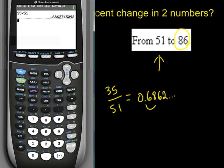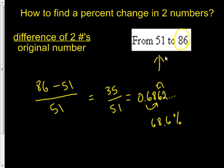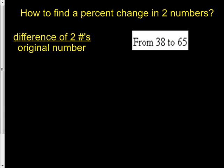We'll just put this down as 0.6862 and it goes on. How do we convert it to a percentage? Just move two to the right, so it becomes 68.6 percent because it went from 51 to 86. That's an increase, so it's a 68.6 percent increase.